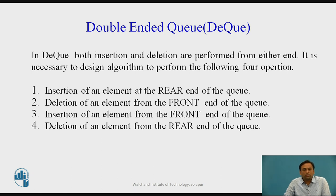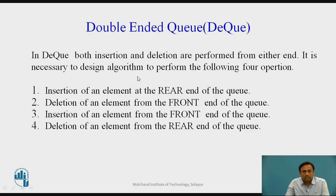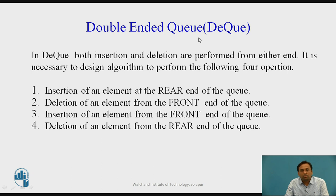Since insertions and deletions are performed from either end, it is necessary to design algorithms for four operations: insertion of an element at the rear end, deletion of an element from the front end, insertion of an element from the front end, and deletion of an element from the rear end. This flexibility of operations from both ends is what defines the double ended queue.